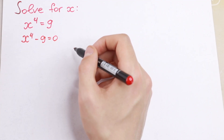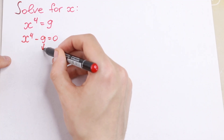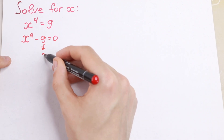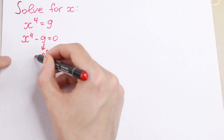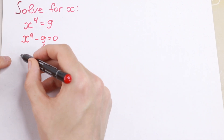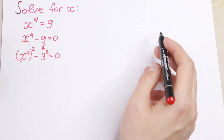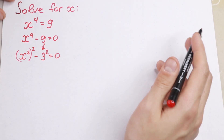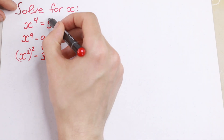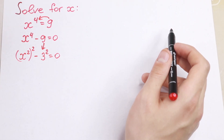And what are we going to do next? Take a look — this 9 is a really good number, because this is a perfect square. We can write it as 3 squared, equal to 0. And this x to the fourth power, we write as x squared to the second power. I hope you understand this step.